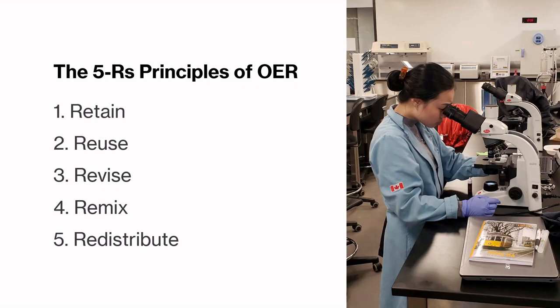There are some key principles — the five R's — where users can retain the materials after they've used them, reuse them as they see fit, and revise or remix them. Revising or remixing could be things like translating, or taking a chapter and putting it into a new course package. And they can redistribute that content.